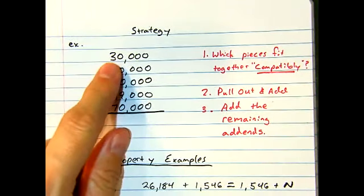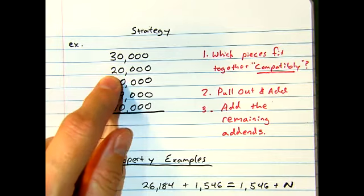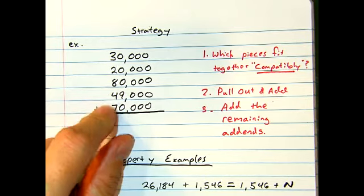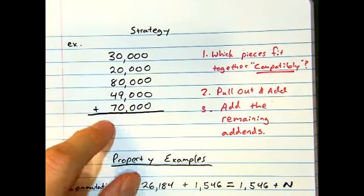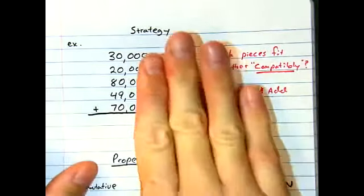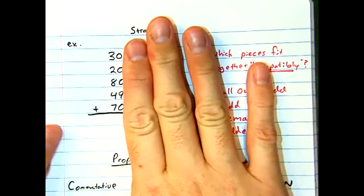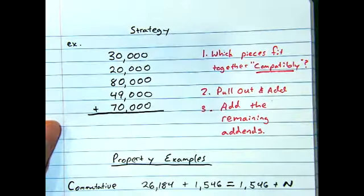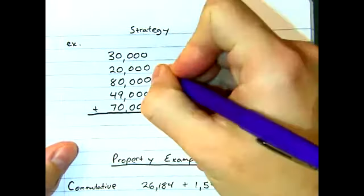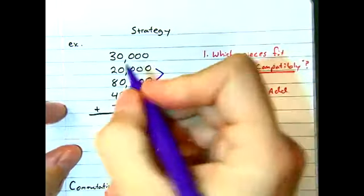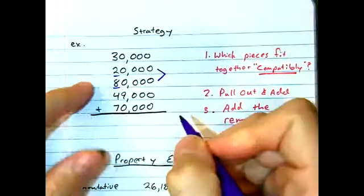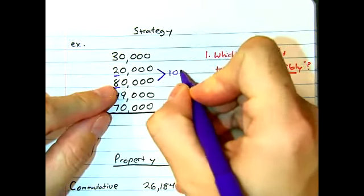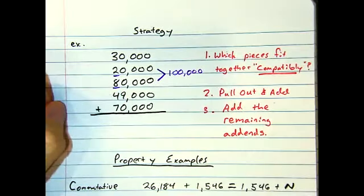Let's scan our list of add-ons. 30,000, 20,000, 80,000, 49,000, 70,000. Which two go together? And I'm just going to look at the thousands, please. Which two go together to make a zeroed number? Well, I know 80,000 and 20,000 go together. They're compatible. So 80,000 and 20,000 will get 100,000. Okay.